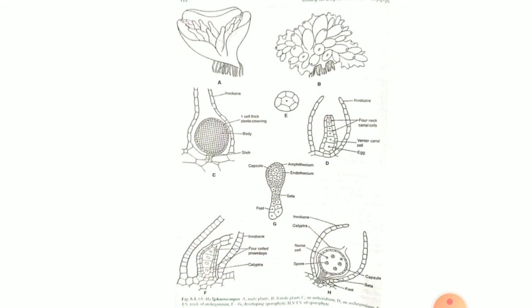The gametophyte has smooth-walled rhizoids, scales are present, and the sporophyte is peculiar. It is peculiar because it has chloroplasts in the capsule wall and nurse cells, and this is why Sphaerocarpos is of partially autotrophic nature.